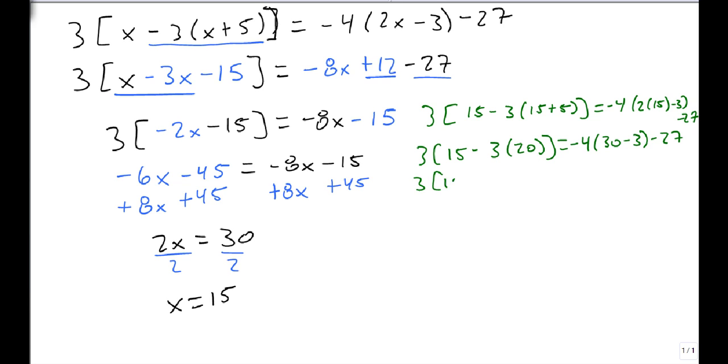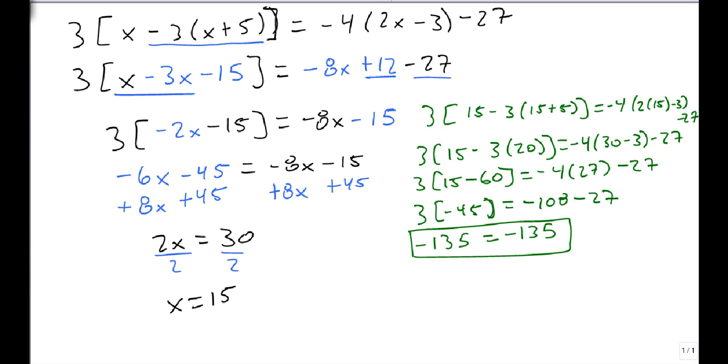3 times 20 is 60. 30 minus 3 is 27. 15 minus 60 is minus 45. Minus 4 times 27 is minus 108. 3 times minus 45 is minus 135. Minus 108 minus 27 is also minus 135. Notice that our answer is the same on both sides. So that means our answer checks out and we are done.